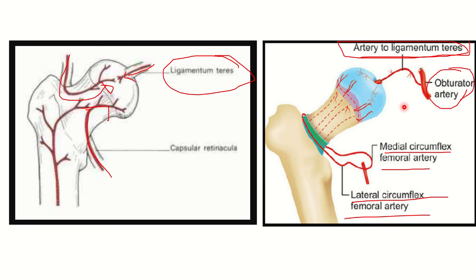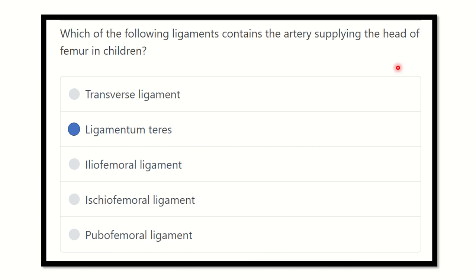The head of the femur is supplied through the ligamentum teres. So our final answer is the ligamentum teres. It contains the artery to the head of the femur, which arises from the obturator artery. The obturator artery arises from the internal iliac artery and supplies the head of the femur in children.